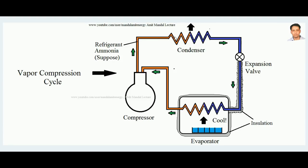In the condenser, the ammonia loses its latent heat to the atmosphere and becomes liquid. When the refrigerant comes out and reaches the condenser it is in vapor phase, but passing through the condenser it becomes liquid by losing the latent heat of vaporization. This compressed refrigerant is then passed through the expansion valve, the pressure reduces, and the ammonia reaches the evaporator.